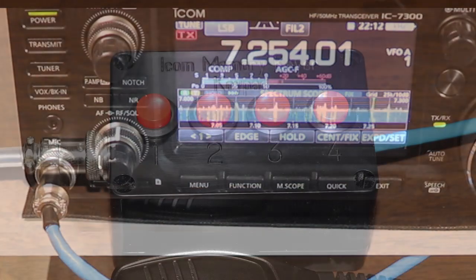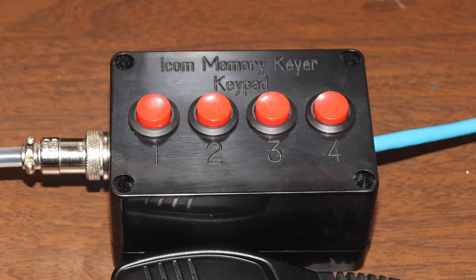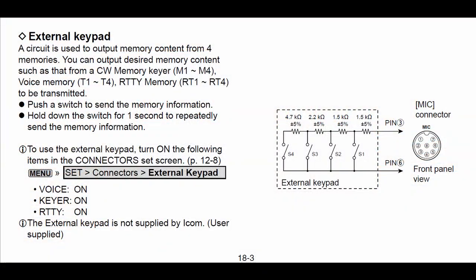The good news is, there's a way to have instant access to the first four transmit memories without going through any menus or pressing any buttons on the radio. In Section 18 of the manual, there is a very brief reference to an external keypad. The manual states that the keypad is user-supplied and shows a simple schematic, but there isn't much additional information. The schematic is pretty simple, it just consists of a few resistors and switches. The circuit connects into the same pins as the hand mic's up and down buttons.